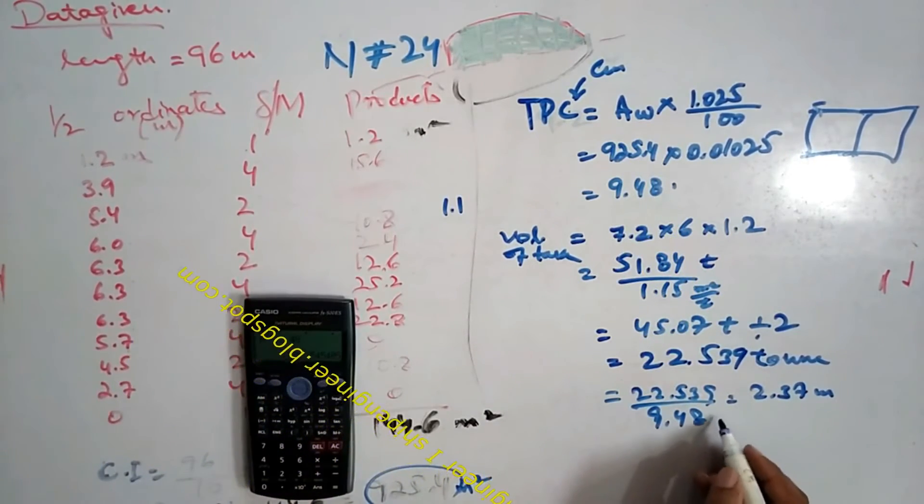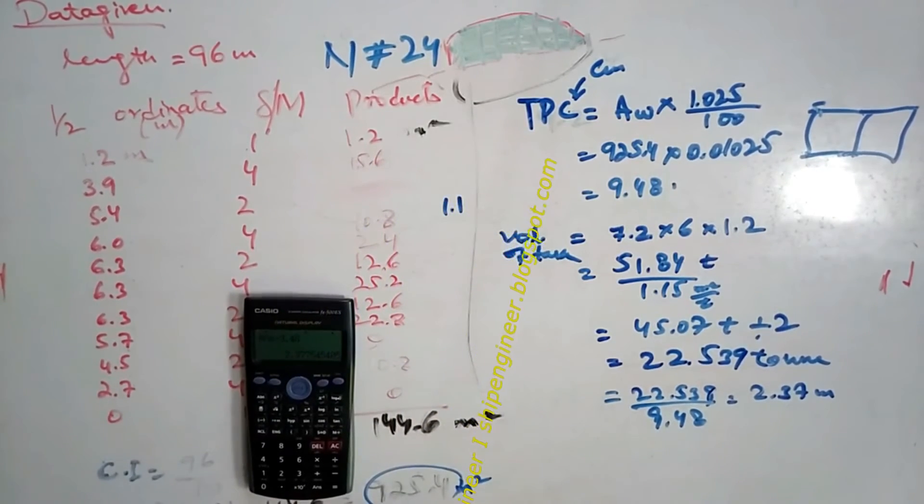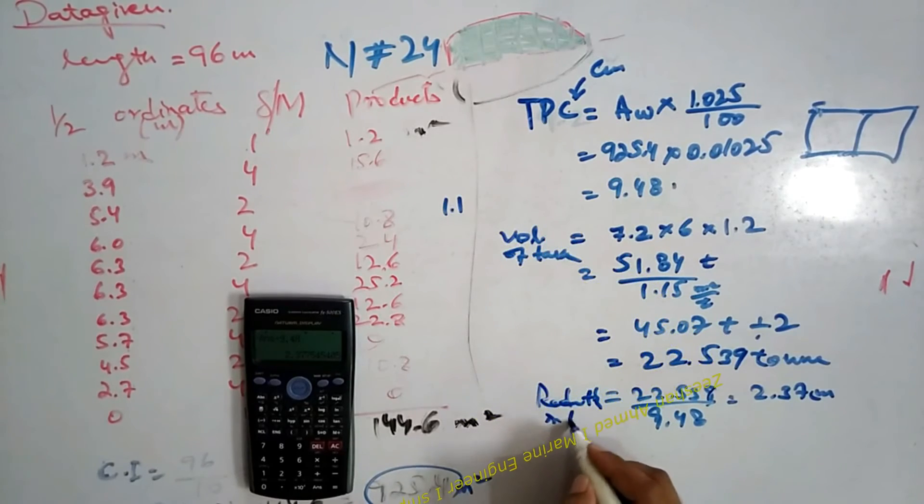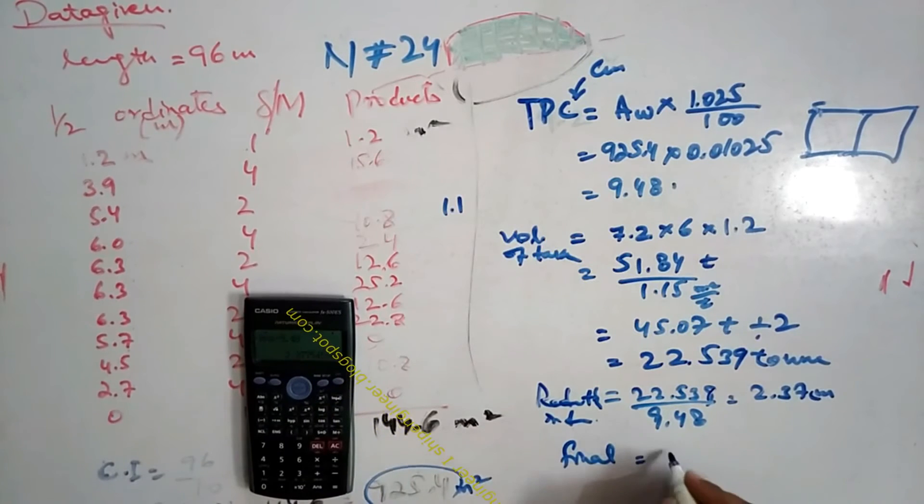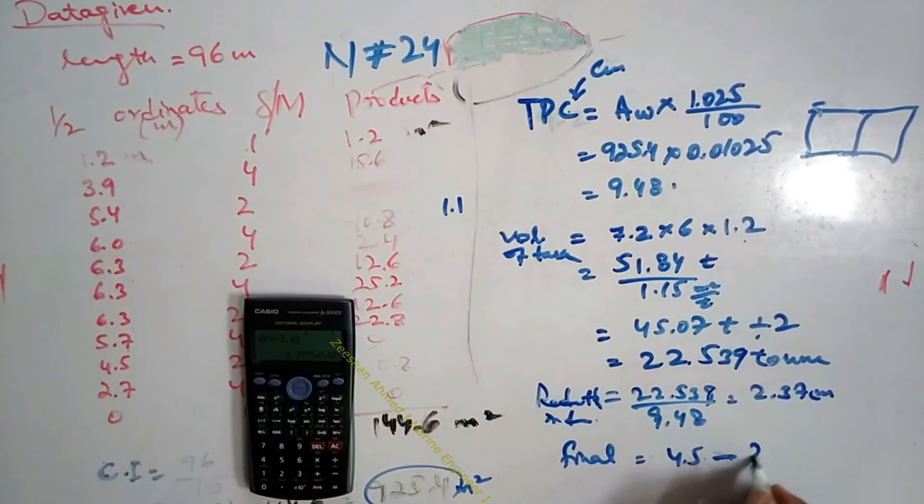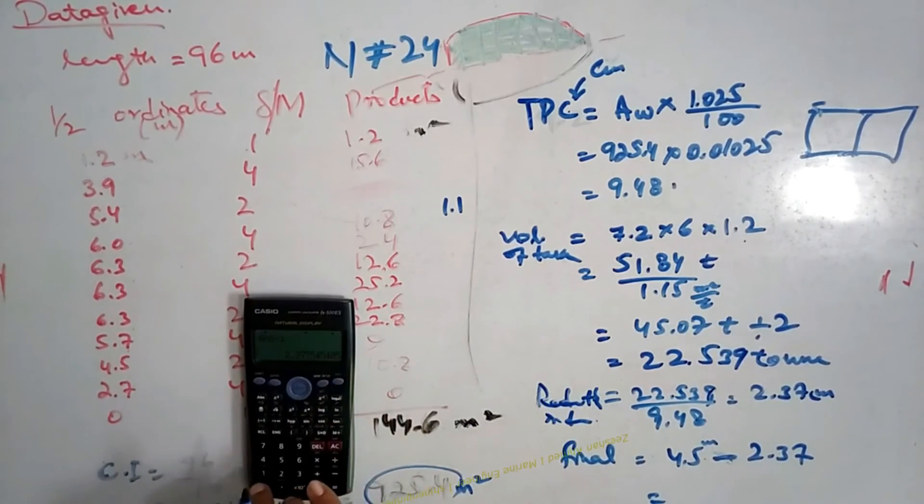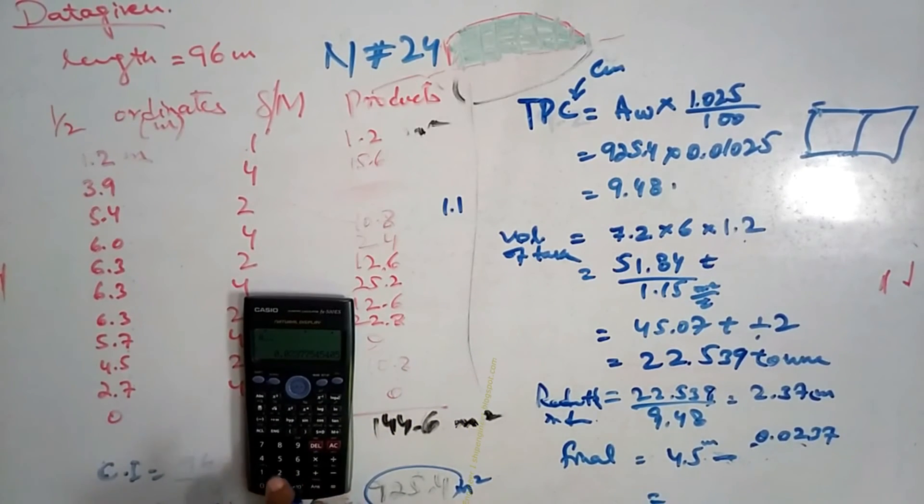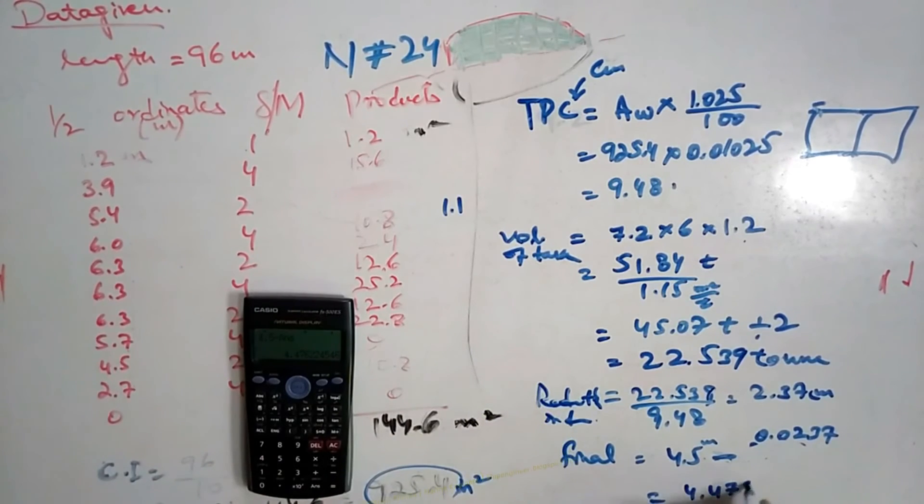For the final draft, the initial draft is 4.5 meters. 1.2 is the depth of the tank. 4.5 minus 2.37, but it's in centimeters, so I have to change this one: divided by 100 equals 0.0237. 4.5 minus 0.0237 equals 4.476 meters.